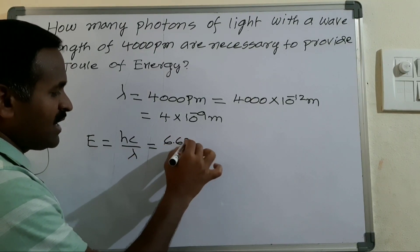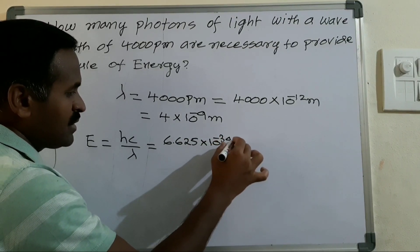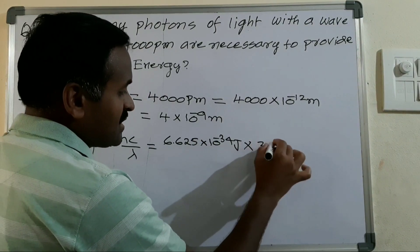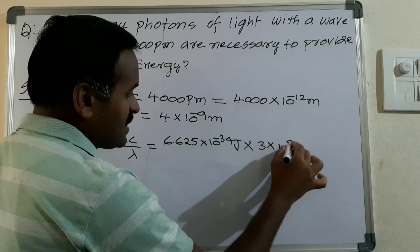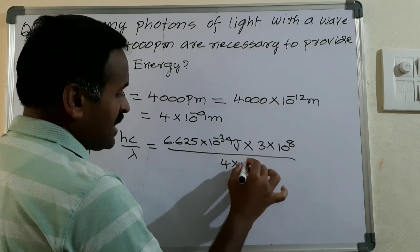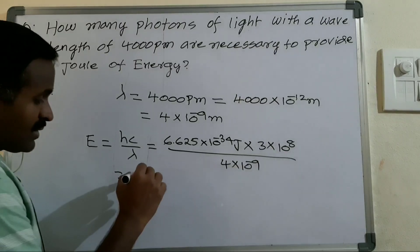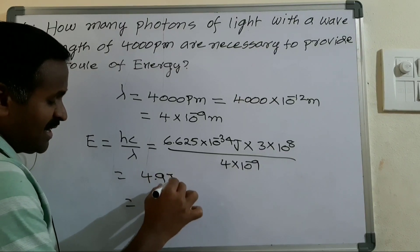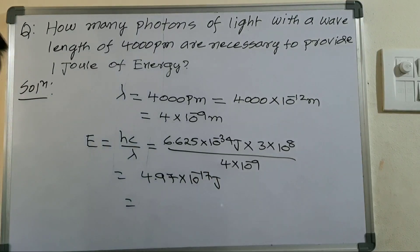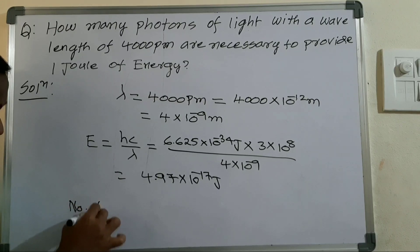h is given as 6.625 into 10 power minus 34 joule-seconds, speed of light c is 3 into 10 power 8 meters per second, and lambda is 4 into 10 power minus 9 meters. After simplification you will get the energy as 4.97 into 10 power minus 17 joules.